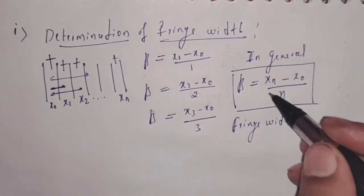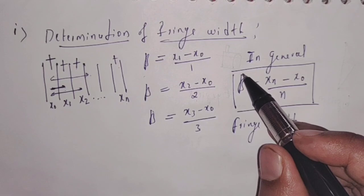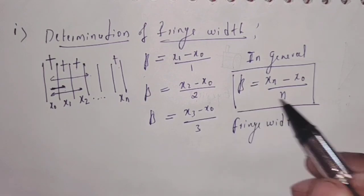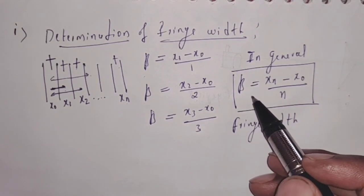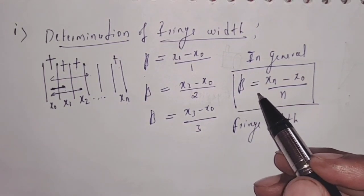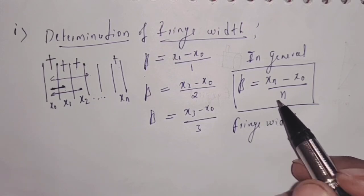Now we have calculated the fringe width. Let us see the second one — how to determine small d.